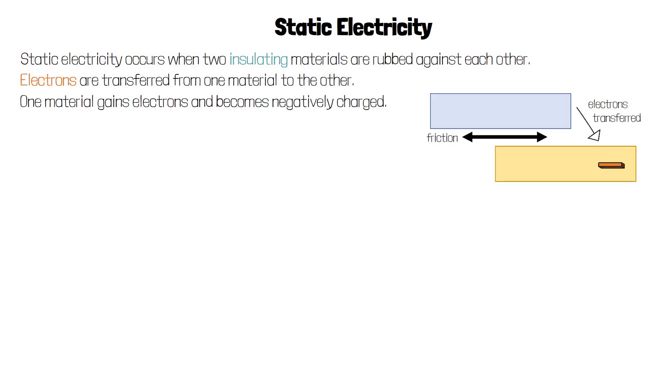One material gains electrons and becomes negative. The other material, which has lost electrons, becomes positively charged.